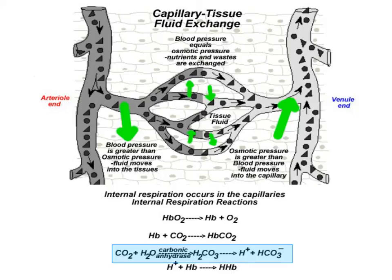Carbonic acid breaks down right away to form the bicarbonate ion and hydrogen ions. This, then, is the source of hydrogen ions that needs to be buffered by the hemoglobin molecule and forms the molecule called reduced hemoglobin.